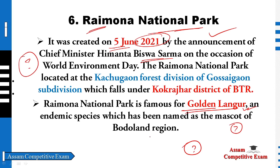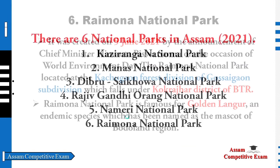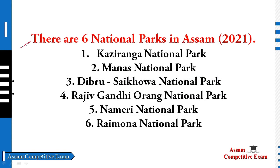Question two is the National Park by Rastroid. The next is the Wild Life Sanctuary — that is the Wild Life Sanctuary. This is the difference. That is Raimona National Park. In 2021, it was declared — this one was among the places officially declared as a national park.